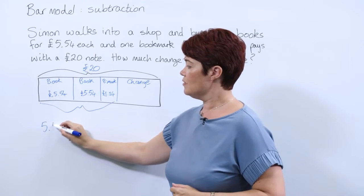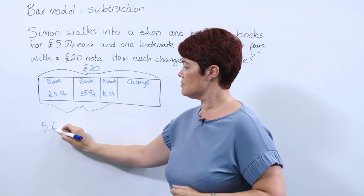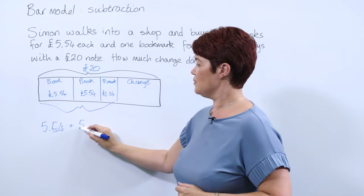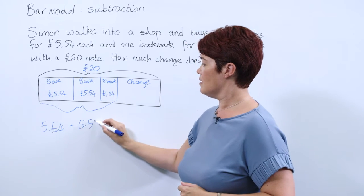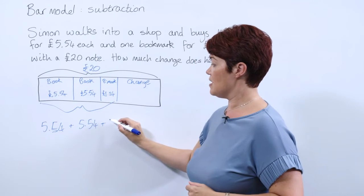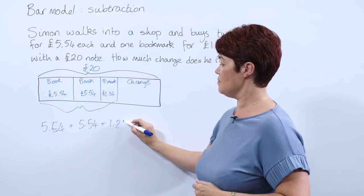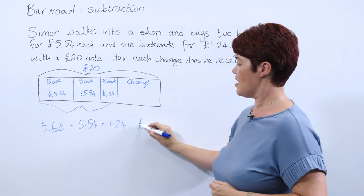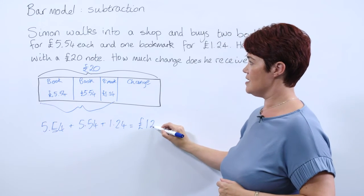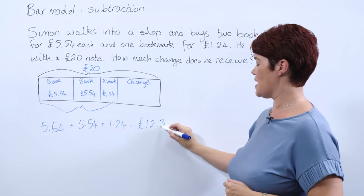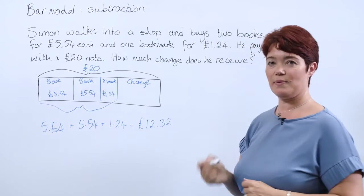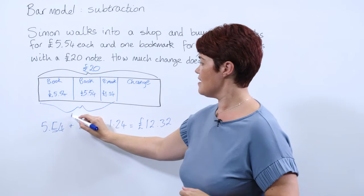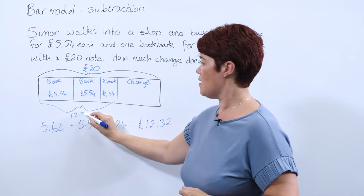They might use the column addition method, or they might use another method that you've shown them, but hopefully they arrive at the fact that he has spent £12.32. We can label that on our bar.